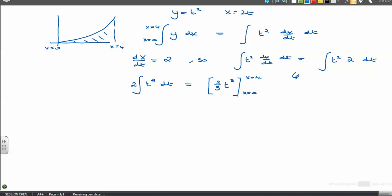And that's from where x is 0 to where x is 4. Now, rather than changing the t back to x so I can put in the limits, I'm going to change my limits to t limits. So when x is 0, t must be equal to 0. And when x is 4, t must be equal to 2.